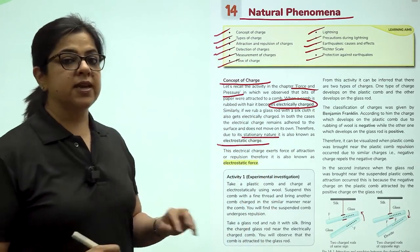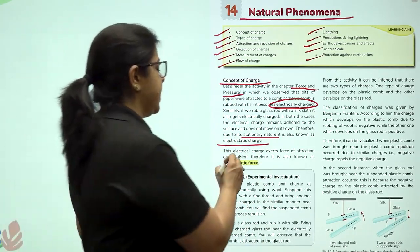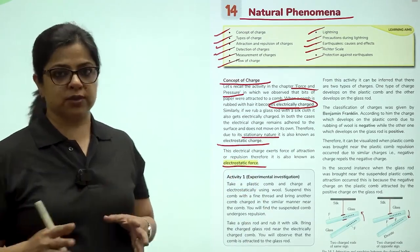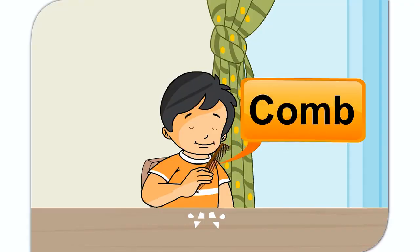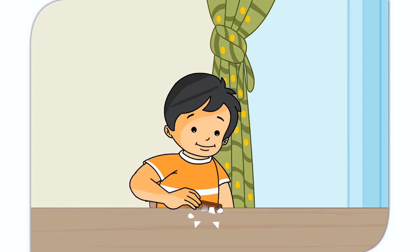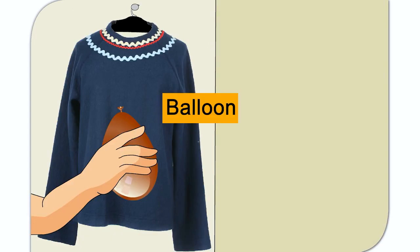These charges exert a force which is called electrostatic force. Take a plastic comb and rub it on your dry hair several times. Bring it near bits of paper. The comb attracts the bits of paper because the plastic comb gets electrically charged on rubbing.